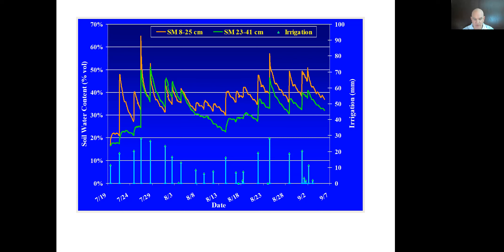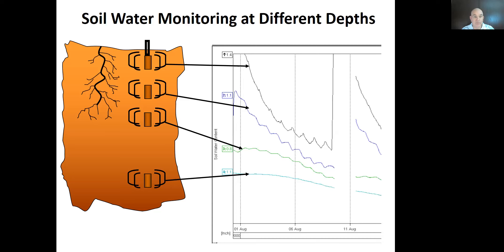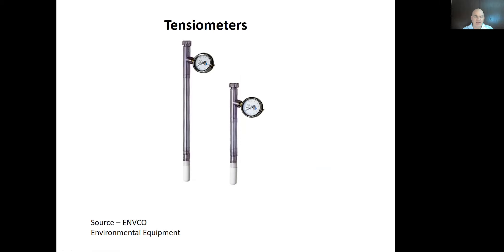Here's another example using four sensors of a different type. Three sensors are in the root zone and one is deeper to check whether we're pushing water too deep. The shallowest one gets drier and drier until we turn on the irrigation system, and you can see we only put on enough water to fill the top six inches or so — not much reached the second foot.